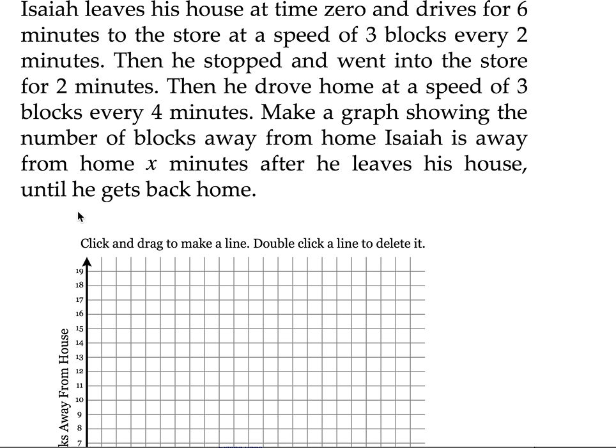Isaiah leaves his house at time 0 and drives for 6 minutes to the store at a speed of 3 blocks every 2 minutes. Then he stopped and went into the store for 2 minutes. Then he drove home at a speed of 3 blocks every 4 minutes. Make a graph showing the number of blocks away from home Isaiah is x minutes after he leaves his house until he gets back home.